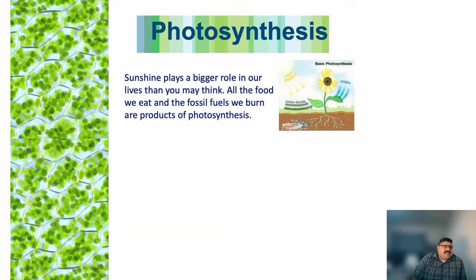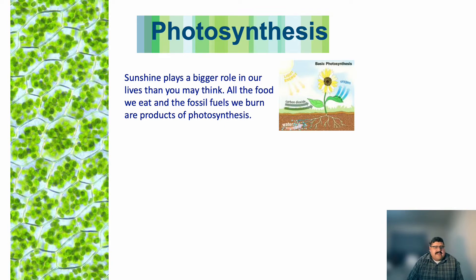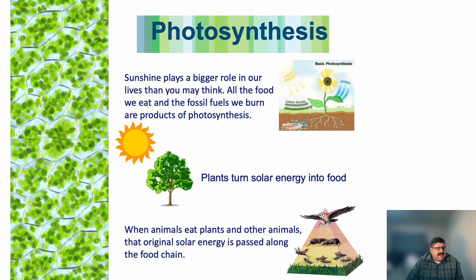Sunshine plays a bigger role in our life than you may think. All the food we eat and the fossil fuels we burn are products of photosynthesis. Plants turn solar energy into food, then animals eat the plants and other animals, and the original solar energy is passed along this food chain — from the sun to the plant, to the animal, and then to us. We can actually bypass some animals just by eating plants, gaining energy directly from them.